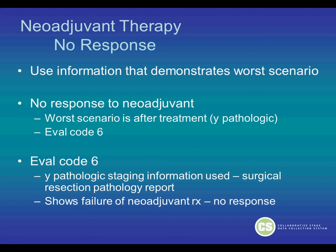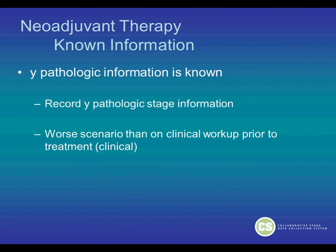For eval code 6, the Y-pathologic staging information is used, which is the surgical resection pathology report. This shows failure of the neoadjuvant treatment — no response to it. Now if you have known staging information, this means that the Y-pathologic staging information is known, so you should record the Y-pathologic stage information. This is the worst scenario compared to the clinical workup prior to the treatment, which was the clinical stage.